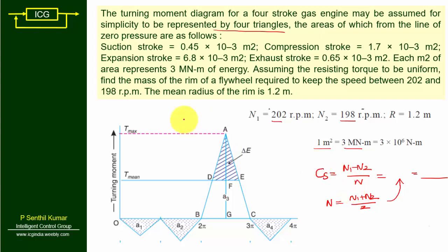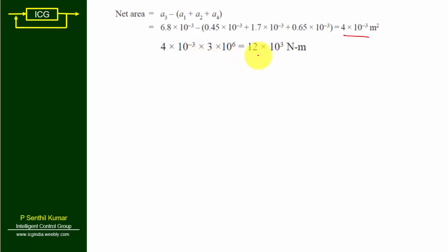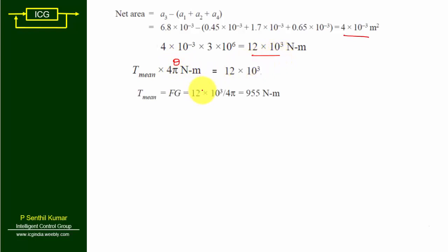In this problem only A3 (expansion) is positive; the remaining areas are negative. Net area equals A3 minus A1 minus A2 minus A4. After manipulation, the net area is 4×10⁻³ m². Multiplying by the scale factor 3×10⁶ gives total work done equals 12×10³ Newton meters. Then T_mean equals 12×10³ divided by 4π equals 955 Newton meters.